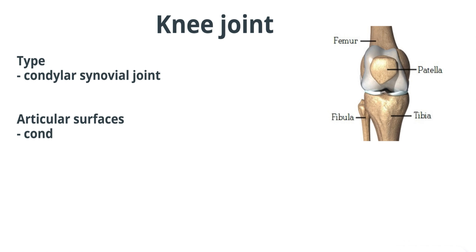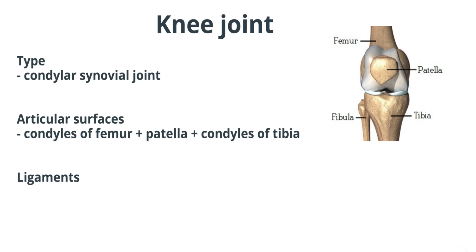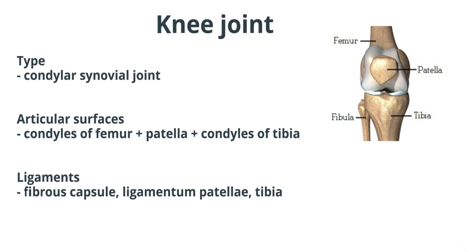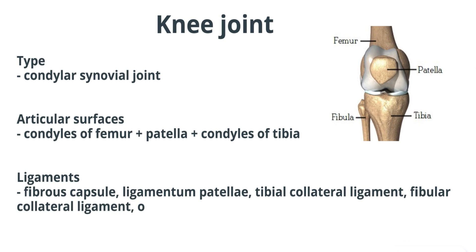The knee joint is a condylar synovial joint — specifically two condylar joints between the condyles of the femur and tibia, and one glide joint between the femur and patella. The articular surfaces are the condyles of the femur, the patella, and the condyles of the tibia. The ligaments supporting this joint include the fibrous capsule, the patellar ligament, the tibial collateral ligament, the fibular collateral ligament, and the oblique popliteal ligament.